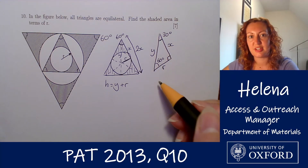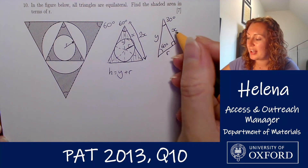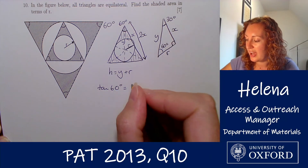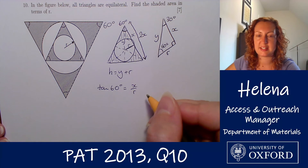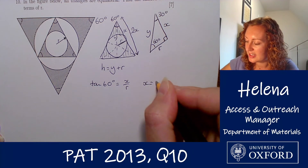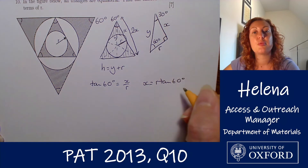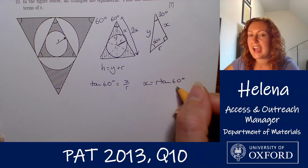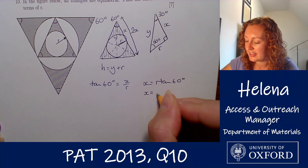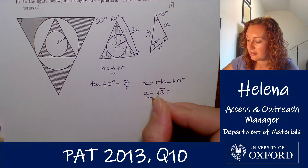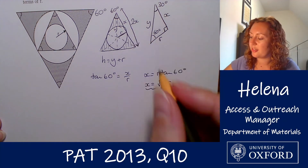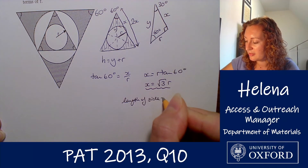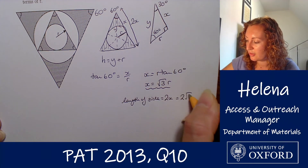I'm going to take a look at the 60 degree angle, and from that I can see that tan(60°) is equal to x over r — the opposite over the adjacent side. So rearranging, x = r·tan(60°). You might remember that tan(60°) is √3, so x = r√3. That means the full length of the side, which is 2x, is 2√3r.